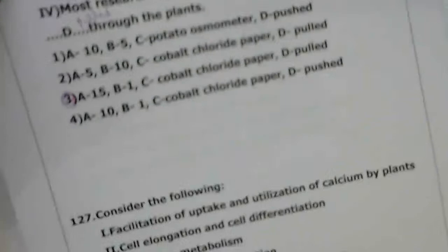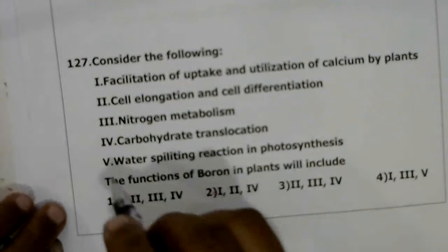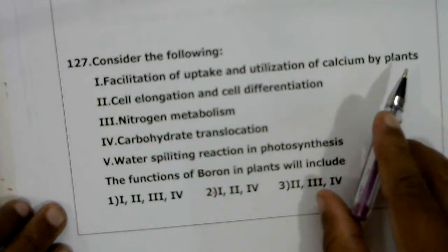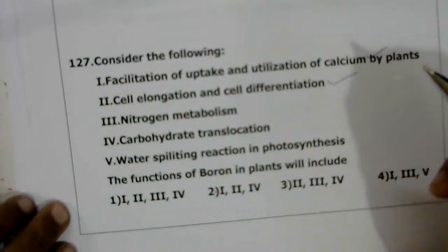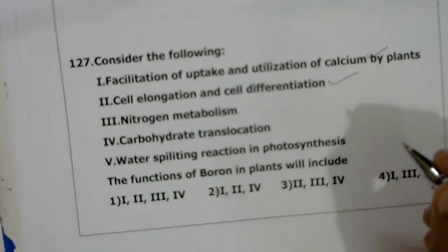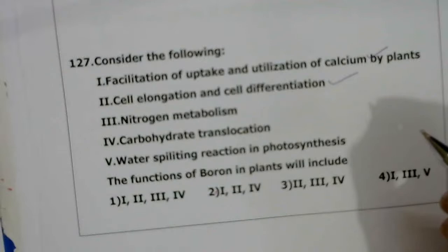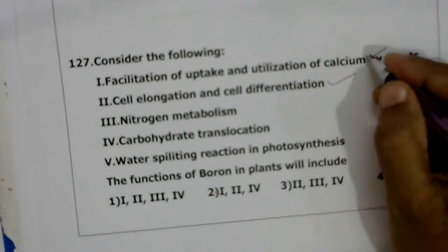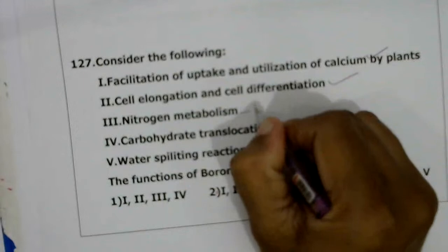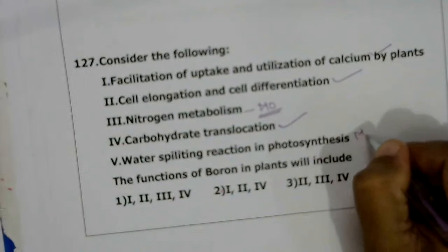Next question: which of the following are correct functions of boron? Five functions are listed: (1) facilitation of uptake and utilization of calcium by plants — function of boron; (2) cell elongation and cell differentiation — function of boron; (3) nitrogen metabolism — function of molybdenum, not boron; (4) carbohydrate translocation — function of boron; (5) water splitting in photosynthesis — catalyzed by Mn and Cl⁻, not boron. Therefore, correct functions of boron are 1, 2, and 4. The correct answer is the second option.